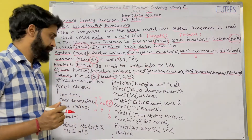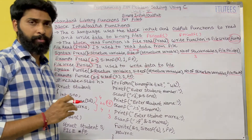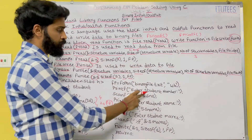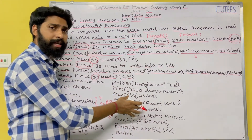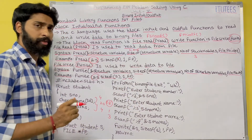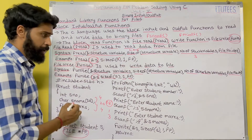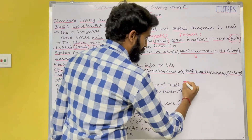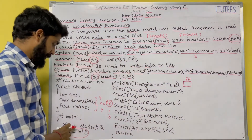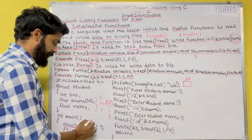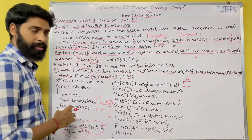Now we see one example. The purpose of the program is to read data from the keyboard — the data is student number, student name, and marks — and store this data as a binary file. First, we are going to create one file pointer. Then we declare struct student s, where student is the structure and s is the variable name.